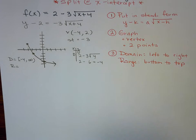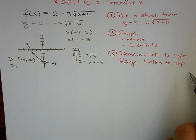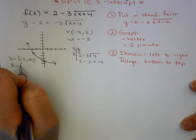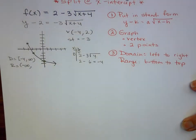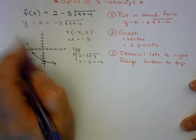Now let's do the range. Range is bottom to top. It's negative infinity because it's going down forever. And how high does it go? It stops at 2. So the domain is negative 4 to infinity with a bracket at negative 4, and the range is negative infinity to 2.